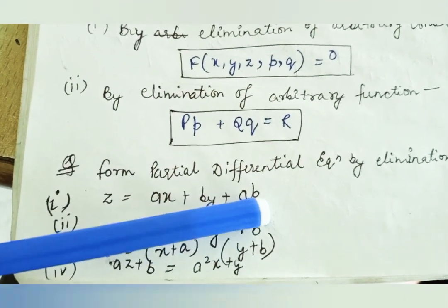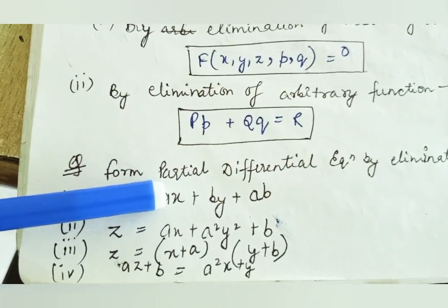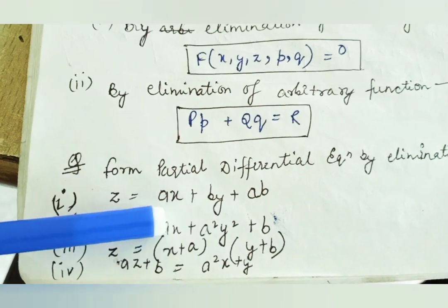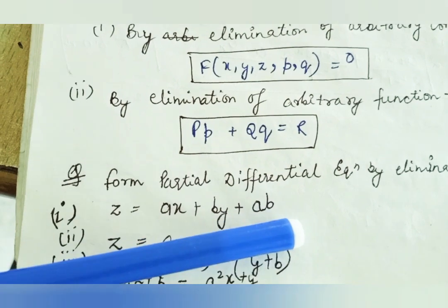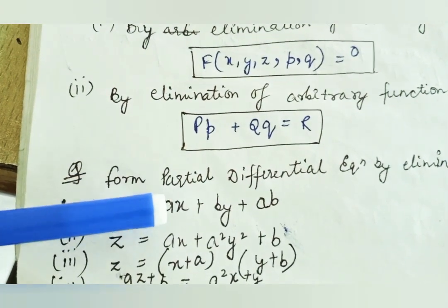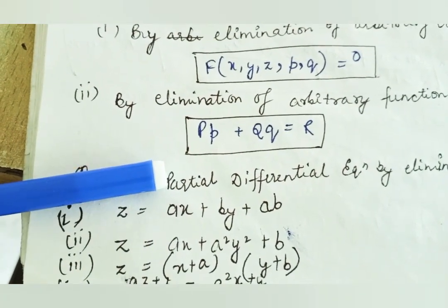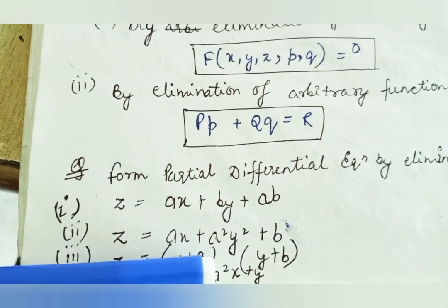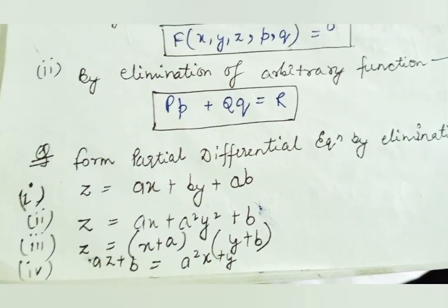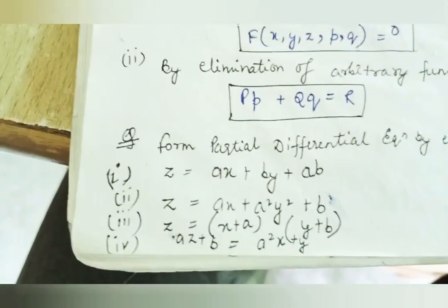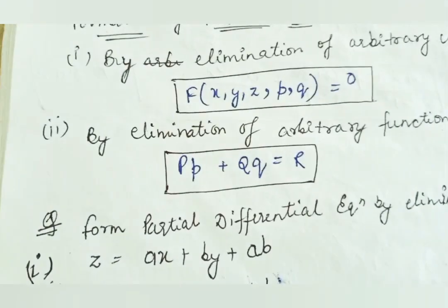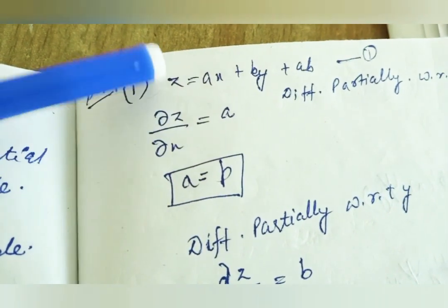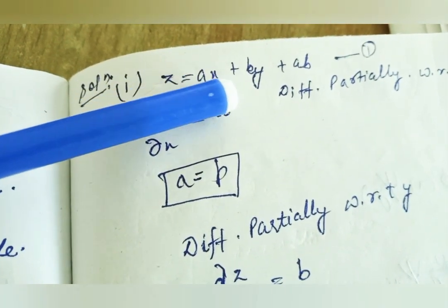After forming the partial differential equation, you have to eliminate arbitrary constants A and B. This is the arbitrary constant A and B. This is the partial differential equation formation. The first question is: what is Z equal to? Z = ax + by + a.